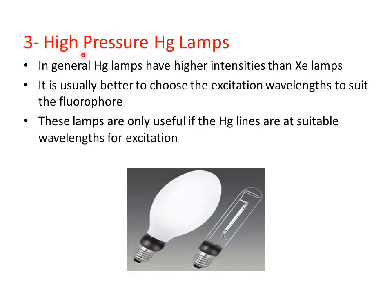Another light source is the high pressure mercury lamp. In general, mercury lamps have higher intensities than xenon lamps, and it is usually better to choose excitation wavelengths to suit the fluorophore. These lamps are only useful if the mercury emission lines are at suitable wavelengths for excitation, meaning their energy matches what is required to excite the atom from the ground state to the excited state.